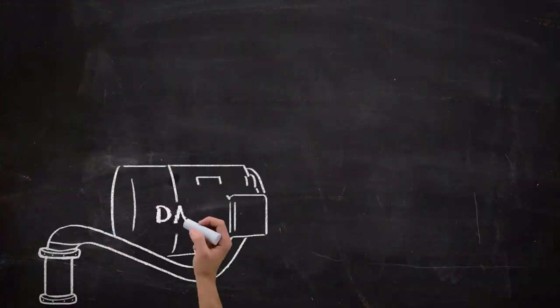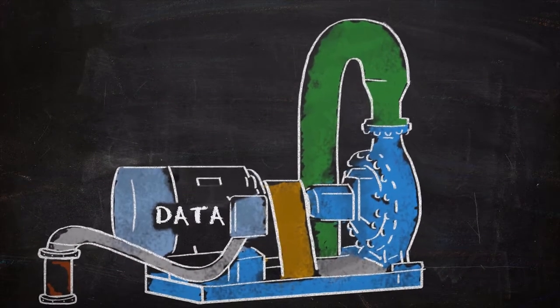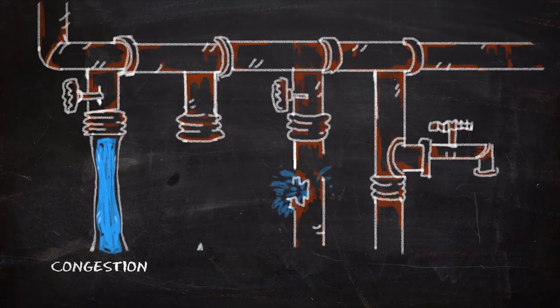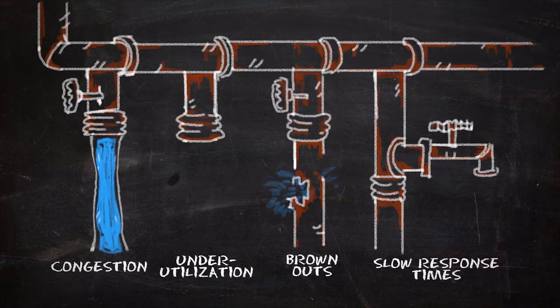Most traditional network approaches try to control the network data and force it down static paths. The problem with the traditional approach is it allows for congestion, underutilization, brownouts, and slow response time.